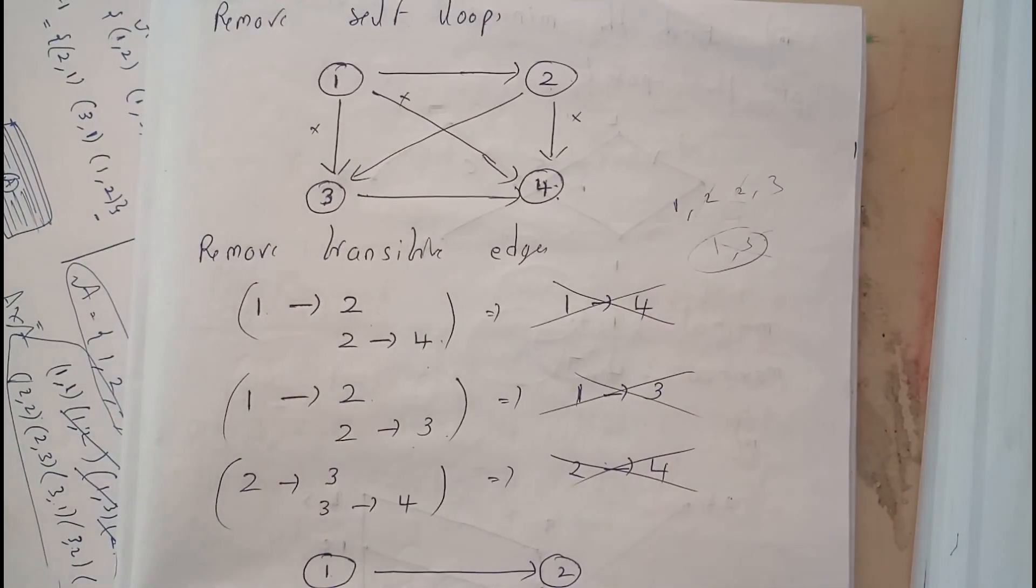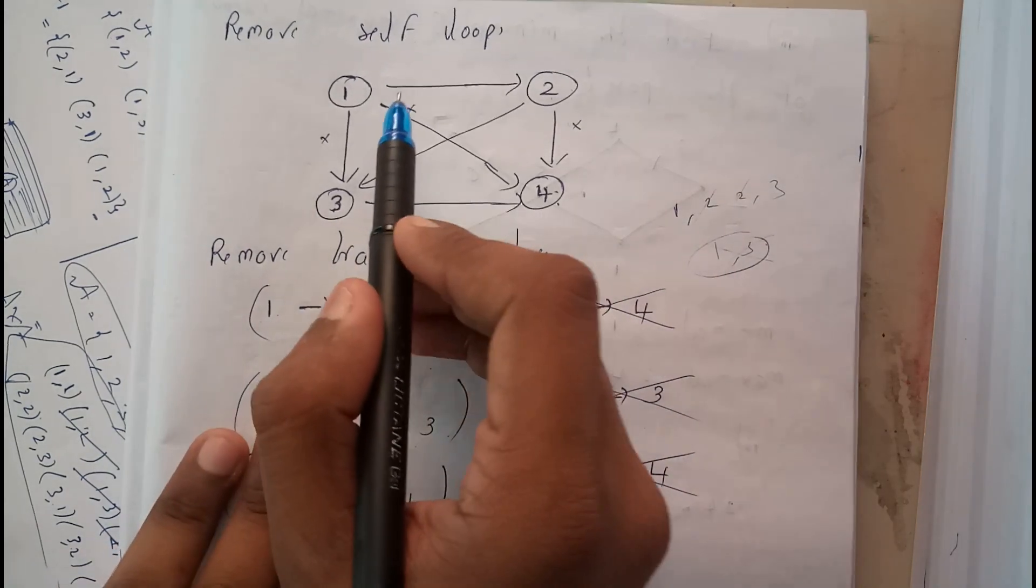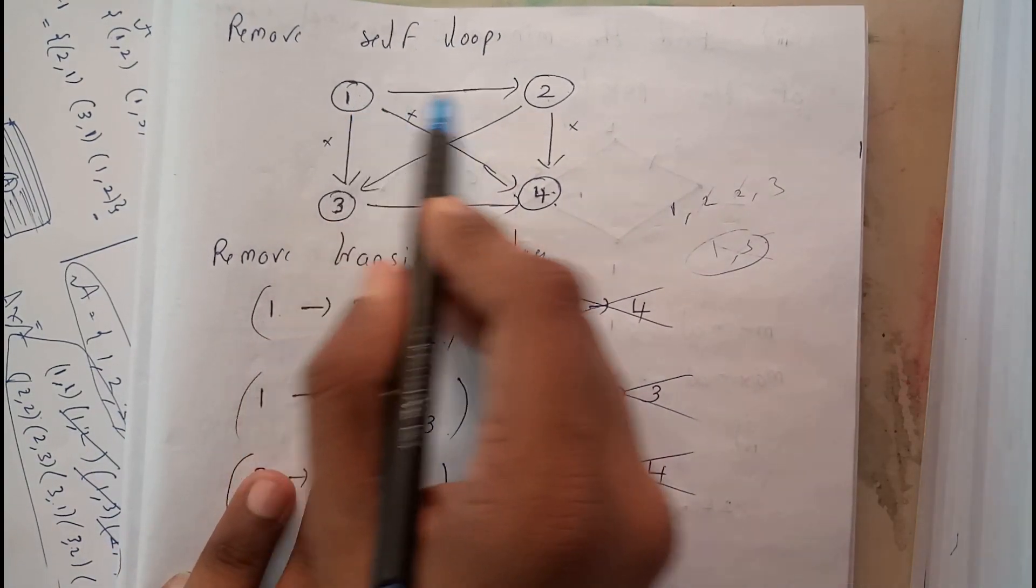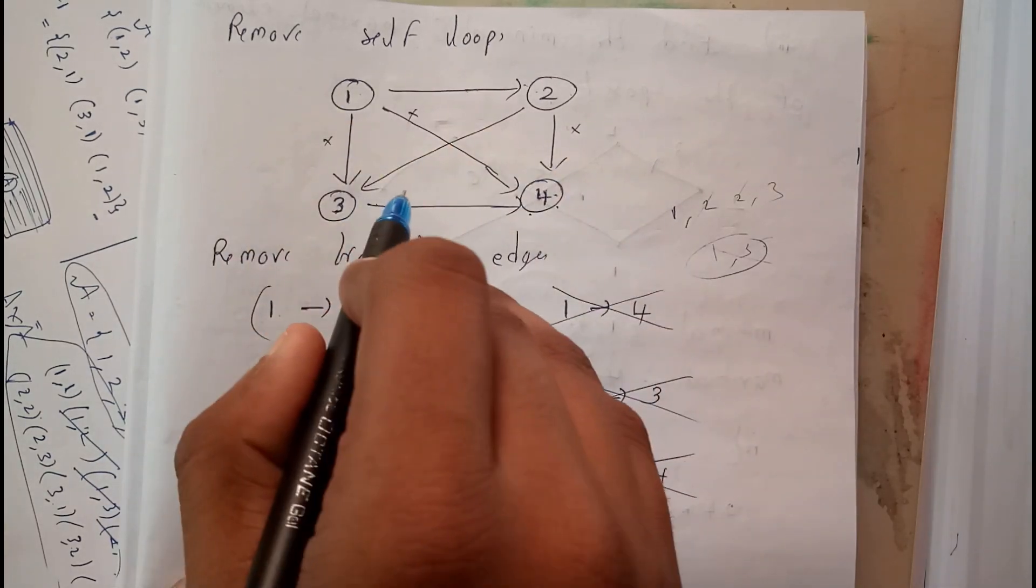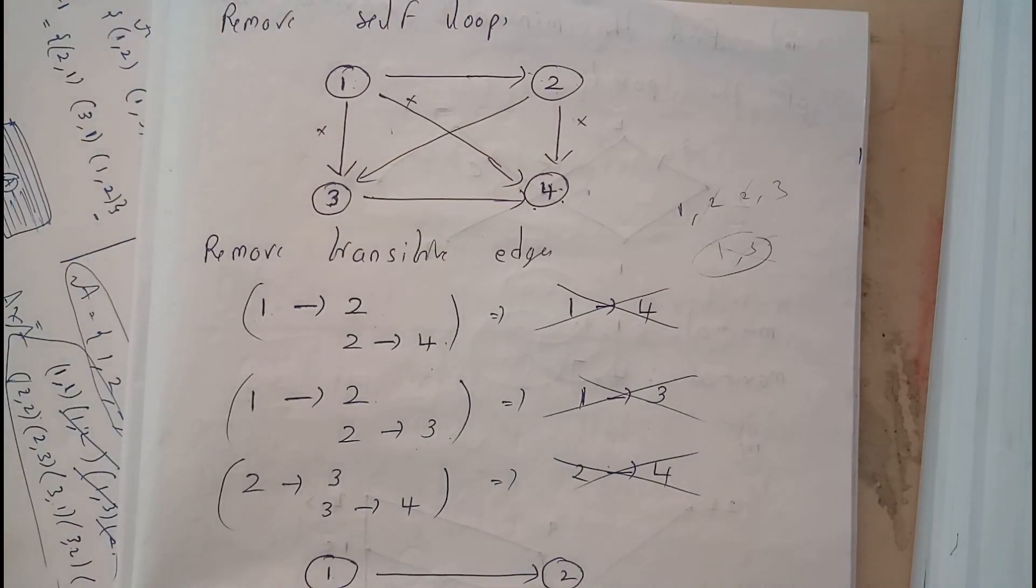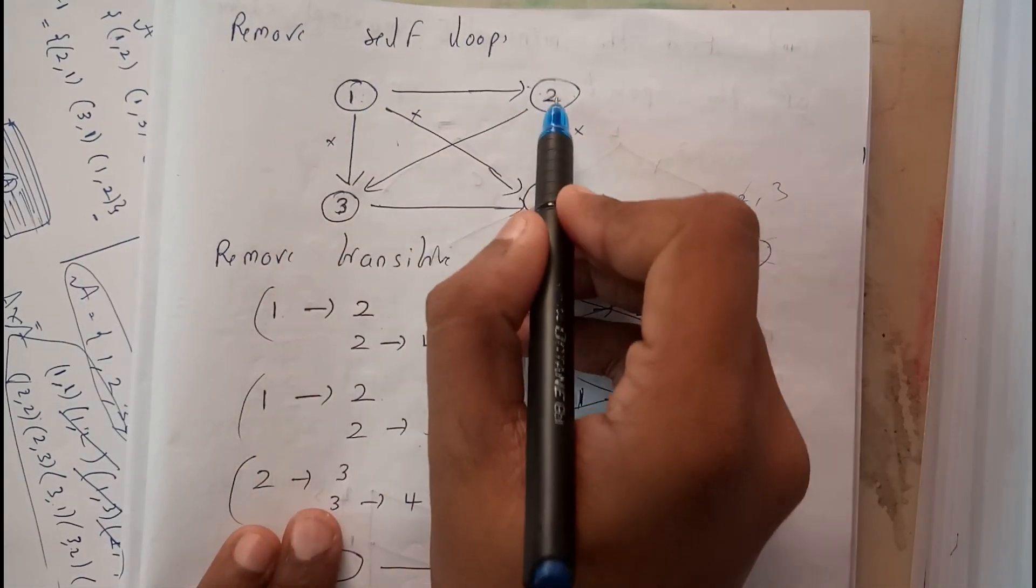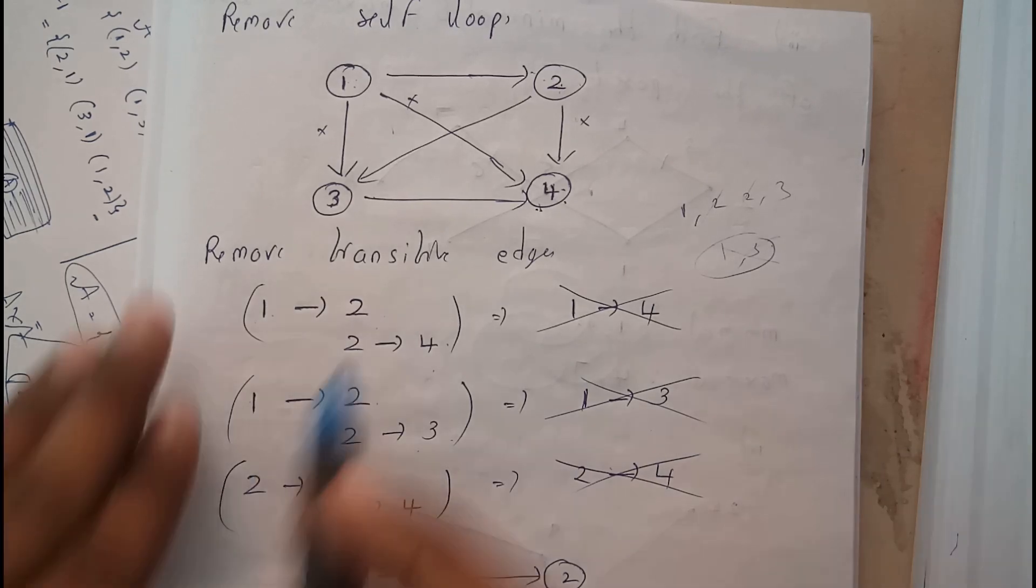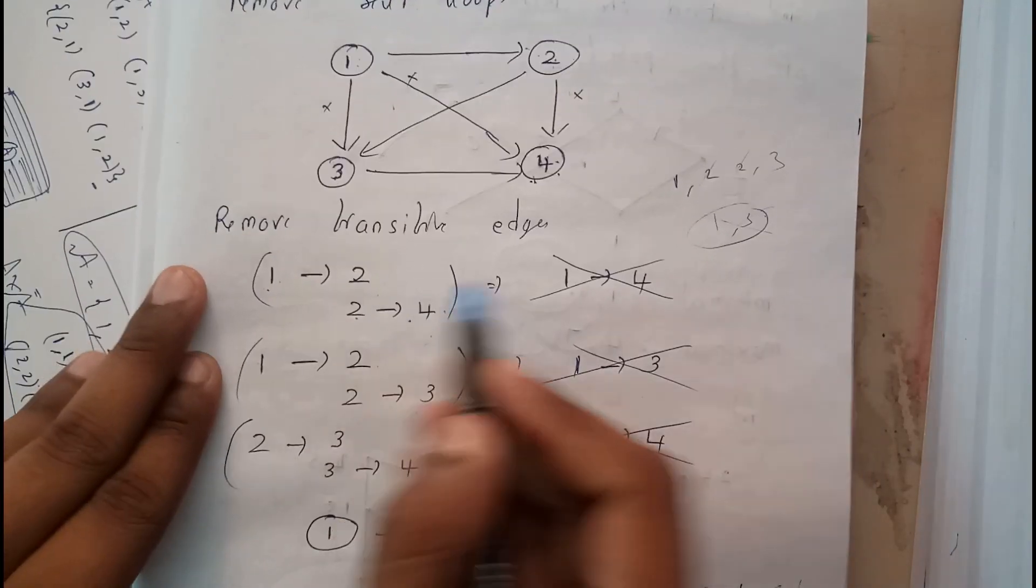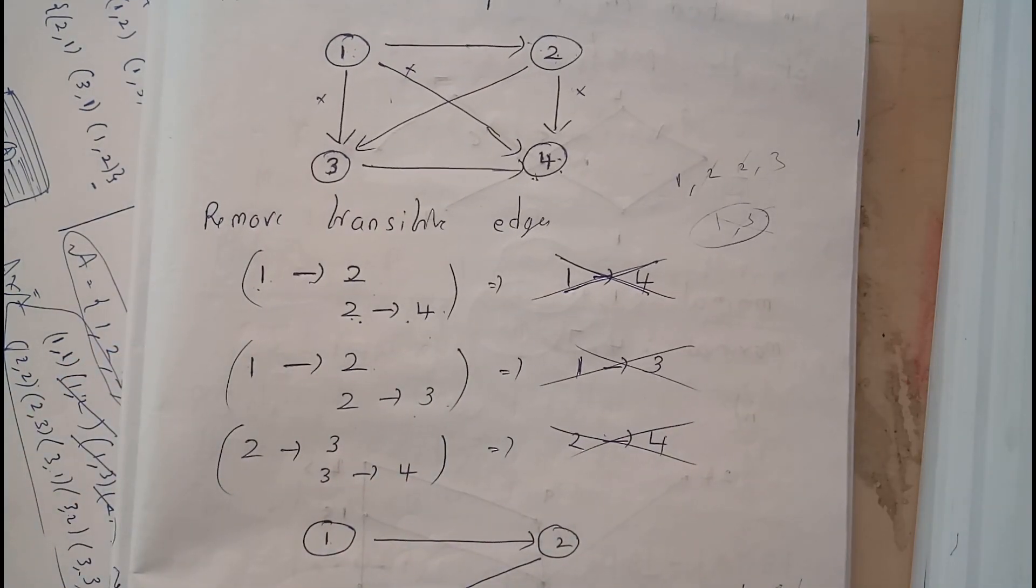Now, there is nothing much to do. Just you need to remove the transitive edges. What is a transitive edge? If 1,2 and 2,4 are existing in the diagram, then what is the need of existing of 1,4? There is no need of 1,4. If 1,2 and 2,4 exist, there will be existence of 1,4. So I will be keeping these both and will be removing this.